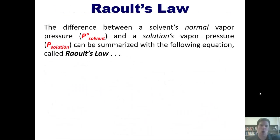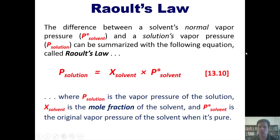That now brings us to Raoult's Law. You see, the difference between a solvent's normal vapor pressure, which we can define as being P-naught solvent, I really don't know why, but it is, and the solution's vapor pressure, which is P-solution, can be summarized using the following equation called Raoult's Law, where P-solution is the vapor pressure of the solution, X-solvent is the mole fraction of the solvent, and P-naught solvent is the original vapor pressure that the solvent would have if it were pure and didn't have any solute dissolved in it.